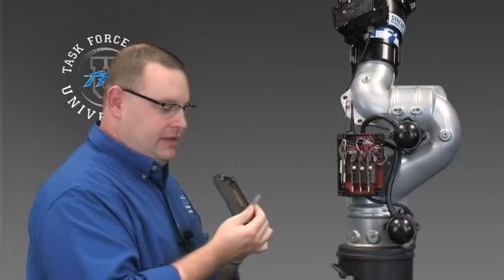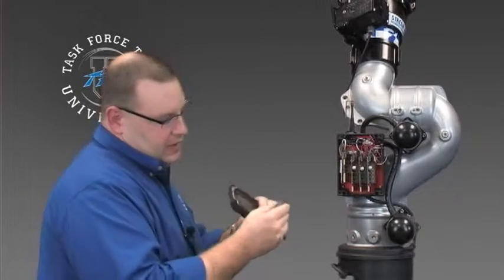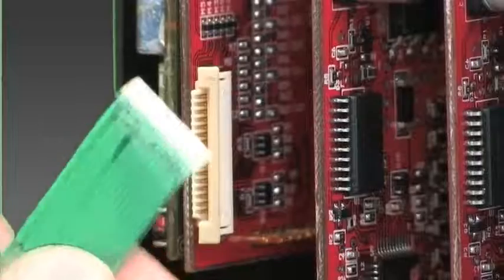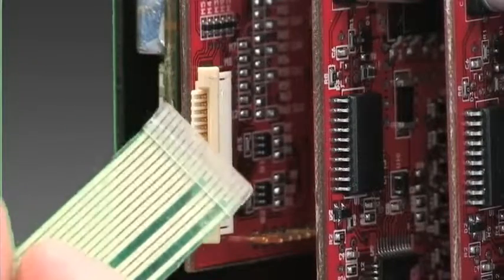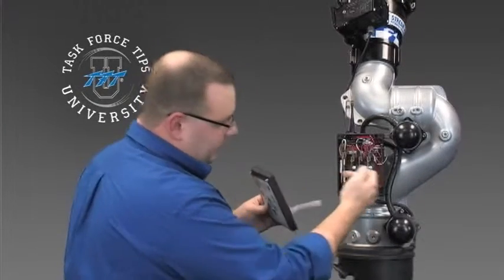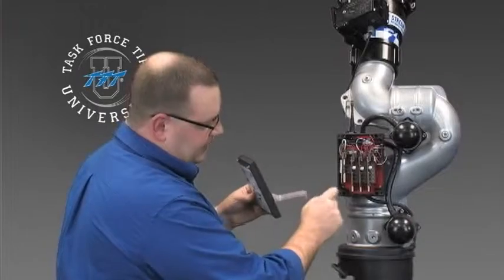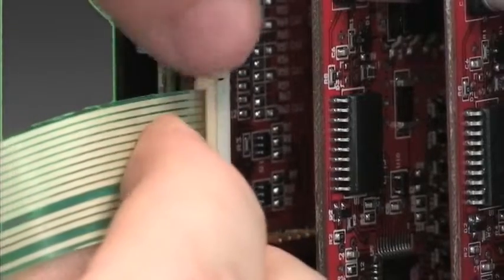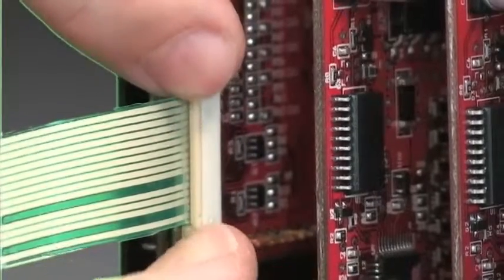If the ribbon cable does pop out of the communication board, it's very easy to get back inside. Just look for the contact side. There's two sides of the ribbon cable—one side that has the contacts and the other side has a protective plastic coating. Just make sure that the side that has the contacts is facing the side of the board that has the contacts on the communication board. Just slide that in, push the plastic piece down, and then push it down again. That connects the ribbon cable to the communications board.